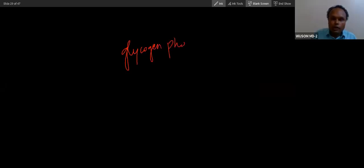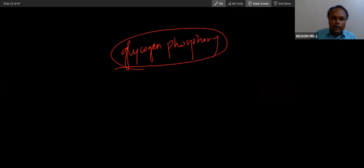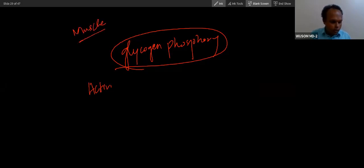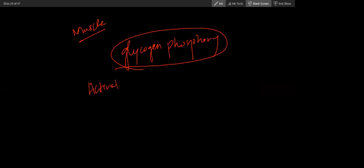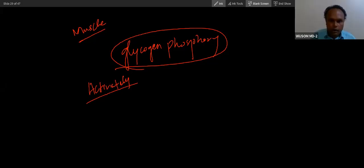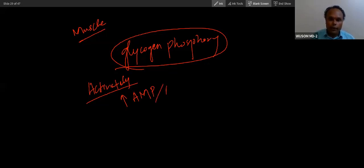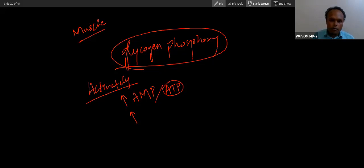Glycogen phosphorylase — let's say muscle — is activated by low energy, meaning AMP, or the AMP-to-ATP ratio. High AMP and low ATP will activate it. What else activates it? Calcium from muscle contraction. And which hormone? Glucagon, and its friend epinephrine. So glucagon and epinephrine activate, while insulin is always alone on the opposite side — no other hormone helps insulin.